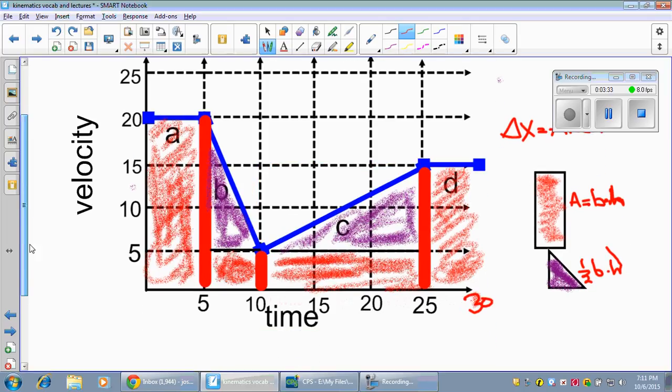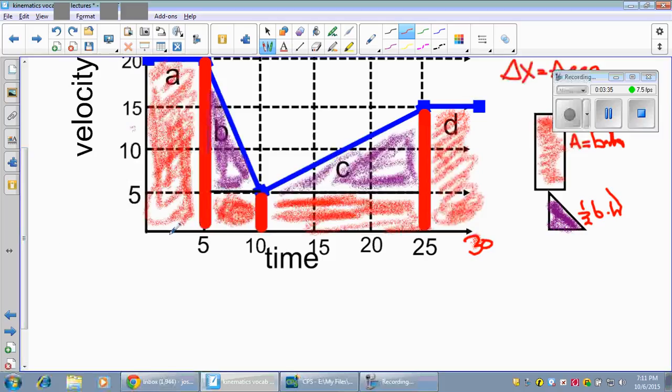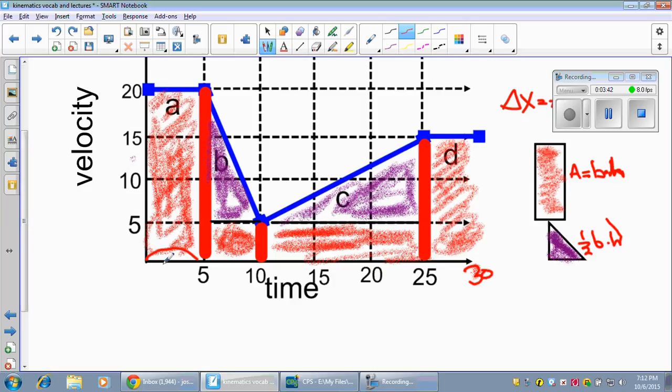Now, let's actually go ahead and calculate some of these things. So the displacement for the first five seconds, zero to five seconds, I can do that simply by doing the base times the height. So the base is five. The height is five, ten, fifteen, twenty. Five times twenty is one hundred meters. You have to make sure you put the unit on everything. Displacement is measured in meters.